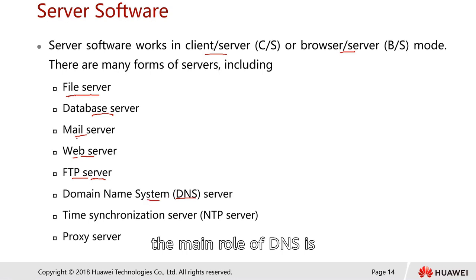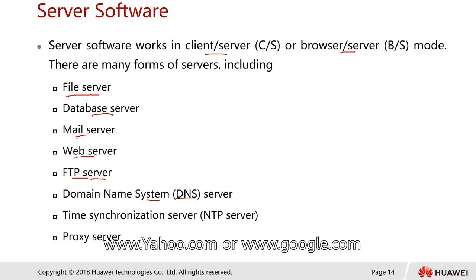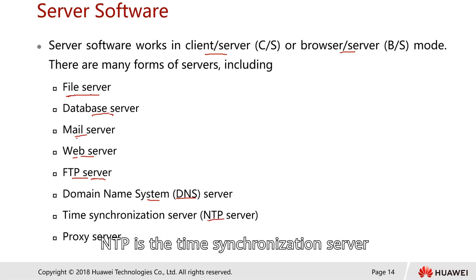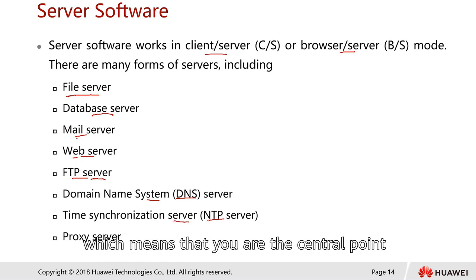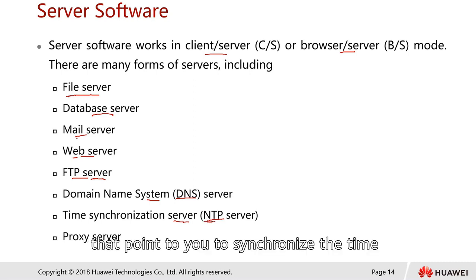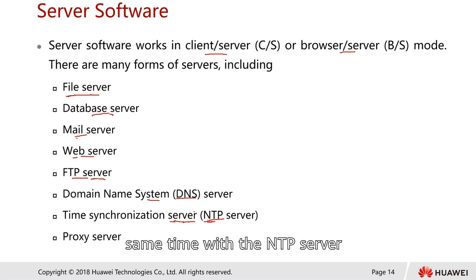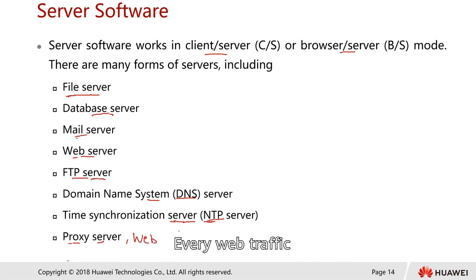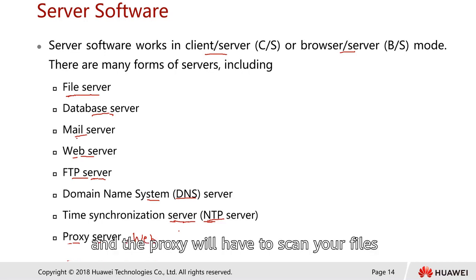DNS server handles name resolution — if someone asks for the IP address of www.yahoo.com or www.google.com, the DNS server responds with the IP address. NTP is a time synchronization server — every machine points to the NTP server using the NTP protocol so they all maintain the same time. A proxy server acts as a middleman — a web proxy scans all web traffic including HTML, JPEG, and EXE files before passing clean content to the user.